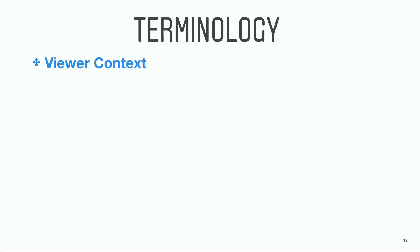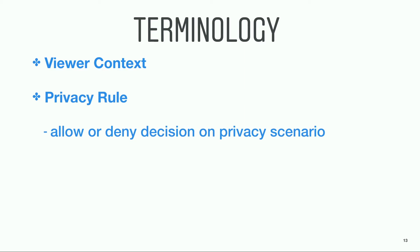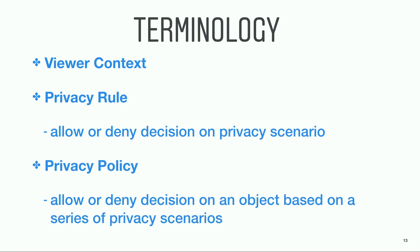Before jumping into how the framework works, let me quickly explain the terminologies we use. The viewer context describes everything we need to know about the user — like the user ID, the geolocation, the IP. The privacy rule describes an allow-or-deny decision based on one privacy scenario. For example, we should deny if the viewer has blocked the user. And the privacy policy describes an allow-or-deny decision on an object based on a series of privacy scenarios. A policy is per-object-based and consists of a set of privacy rules.